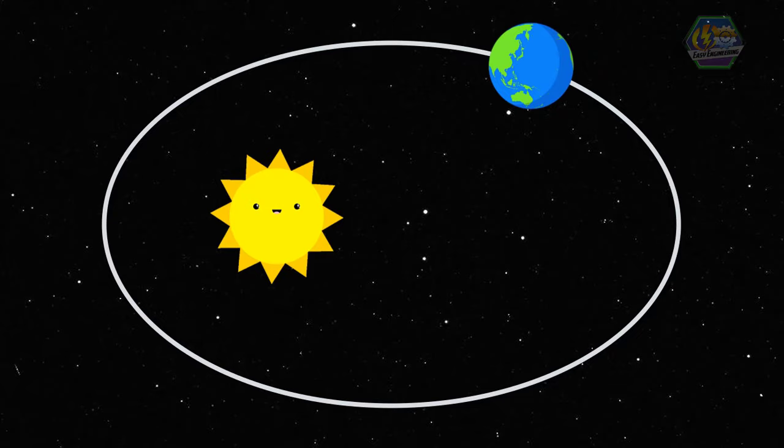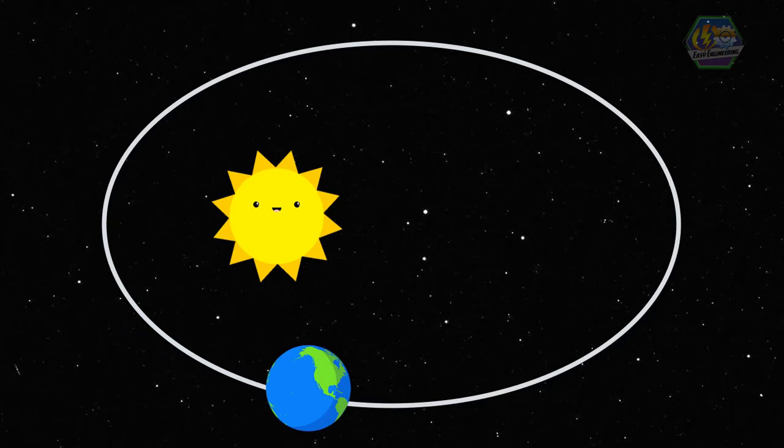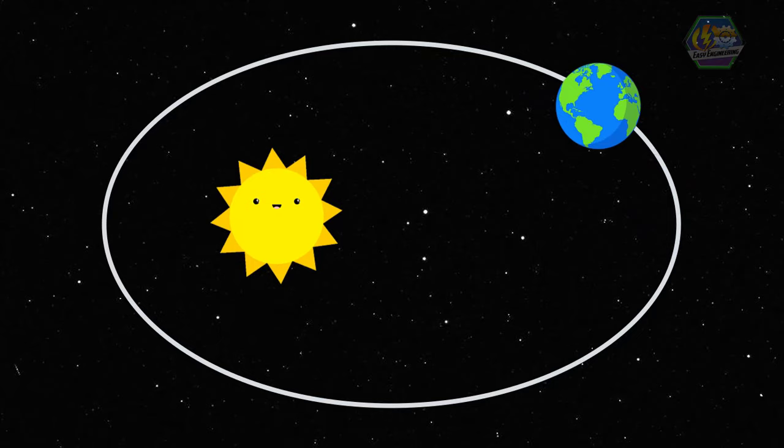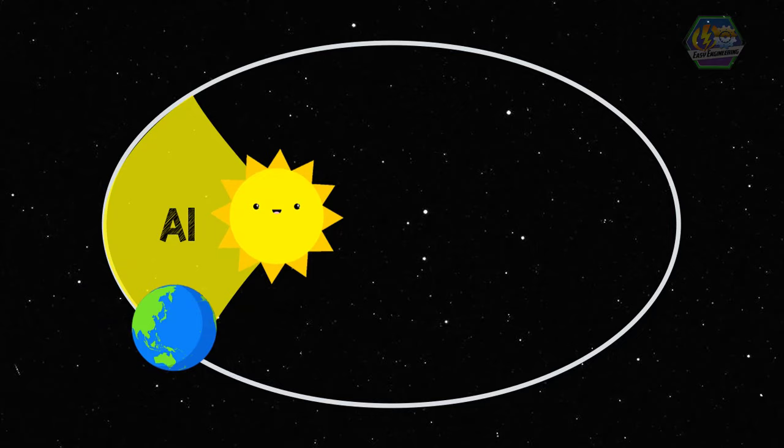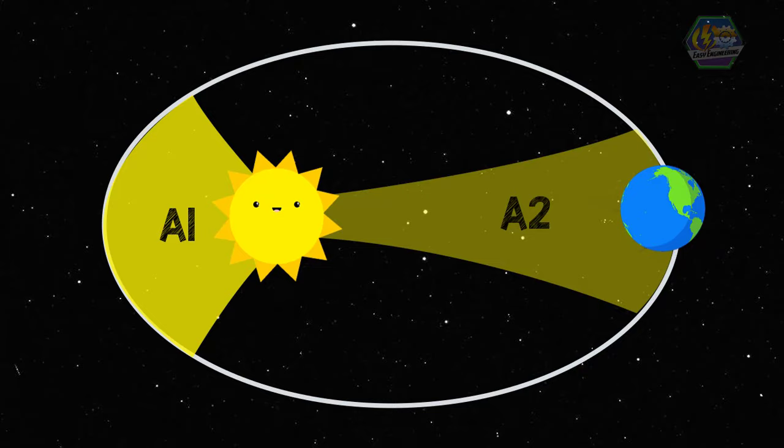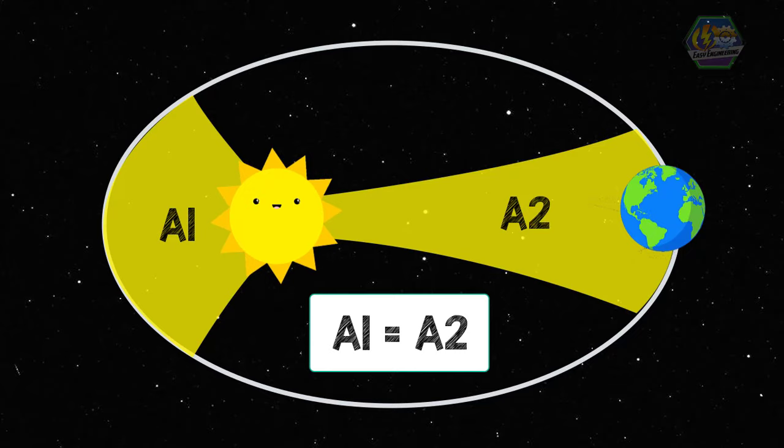When a planet is close to the Sun it moves fast, but when a planet is far from the Sun it moves slowly. So if we draw an imaginary line of the movement of the planet and the Sun for every month of the year, we can see that when the planet is close to the Sun it will form a wide but short triangle, and when the planet is far from the Sun it will form a thin but long triangle. The Earth would have to adjust its movements in order to match the imaginary area.